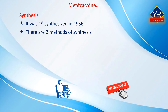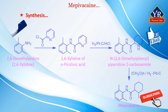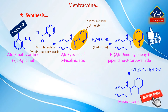Mepivacaine was originally synthesized in Sweden in 1956. Two methods of synthesis have been suggested. According to the first method, mepivacaine is synthesized by reacting the ethyl ester of 1-methylpiperidine-2-carboxylic acid with 2,6-dimethylaminomagnesium bromide, which is synthesized from 2,6-dimethylaniline and ethylmagnesium bromide. According to the second method, reacting 2,6-dimethylaniline with the acid chloride of pyridine carboxylic acid gives the 2,6-xylidine of alpha-picolinic acid. The aromatic pyridine ring is then reduced to piperidine by hydrogen in the presence of a platinum on carbon catalyst. The resulting compound is methylated to mepivacaine using formaldehyde with simultaneous reduction by hydrogen in the presence of platinum on carbon catalyst.